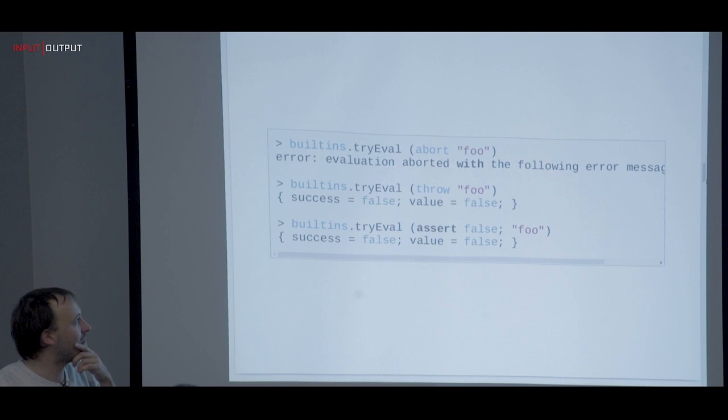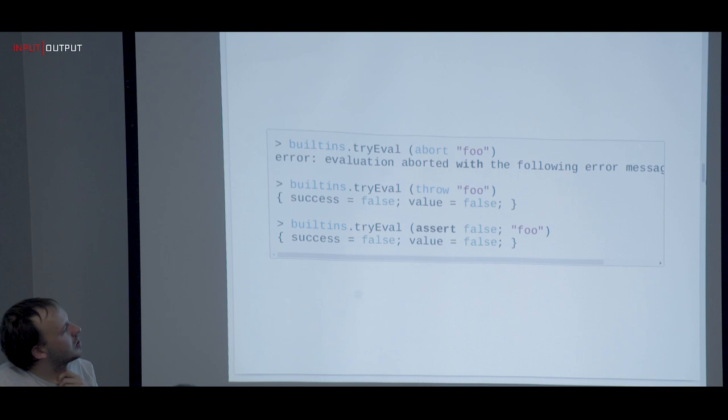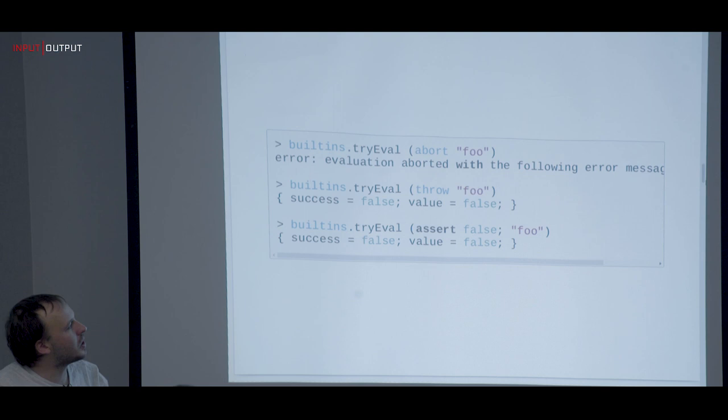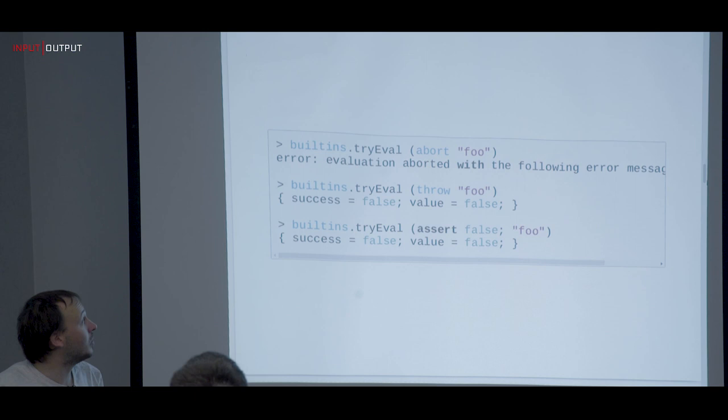Nix has three ways to handle exceptions. First, `abort` — that aborts evaluation and there's no way around it. Then there's `throw`, which you can catch with `tryEval`. It returns either success true or false, and either you get the value or you don't. This is what we do in nixpkgs to evaluate each package — if one fails, we don't want the whole thing to fail, so we print the error and move on.